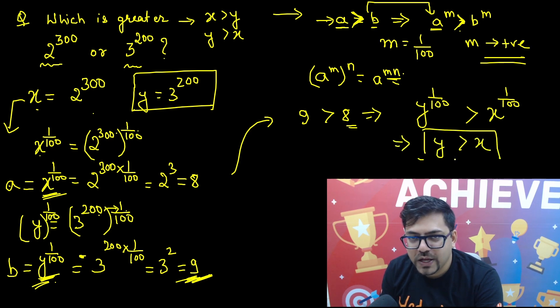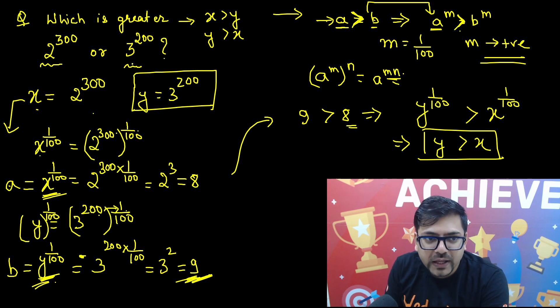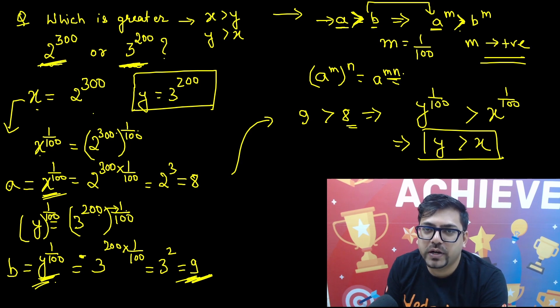And hence we have found the answer: y, which is 3 raised to power 200, is greater than 2 raised to power 300. And that's our answer.